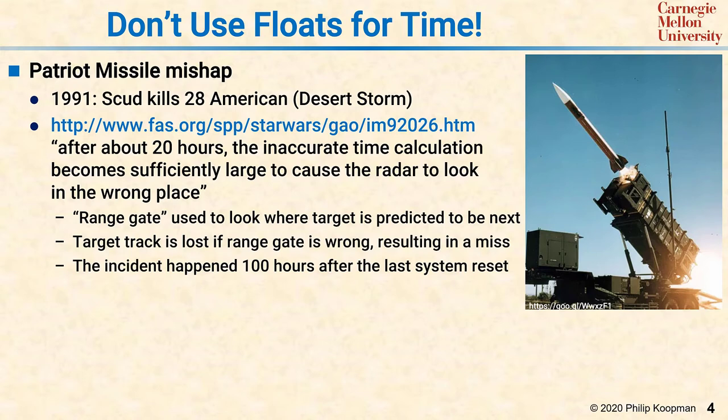A range gate was used to look at where the target is projected to be next, and the target track is lost if the range gate is wrong, resulting in a miss. Let's switch to a picture of what happened, and then we'll come back to this slide.